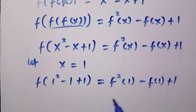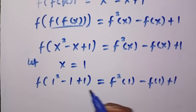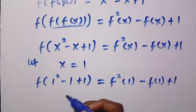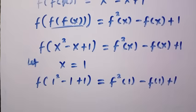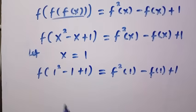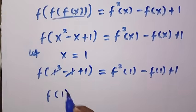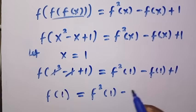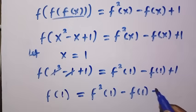So after solving this problem to the last stage, I want another method in the comment box so that we can learn together. I think this is the best method we can use to solve this, but there must be another method. So let's drop it in the comment box. Thank you in advance. So 1 cancelled 1, and we have f of 1 equals f squared of 1 minus f of 1 plus 1.